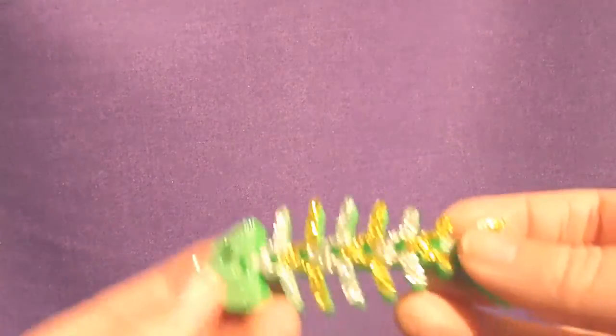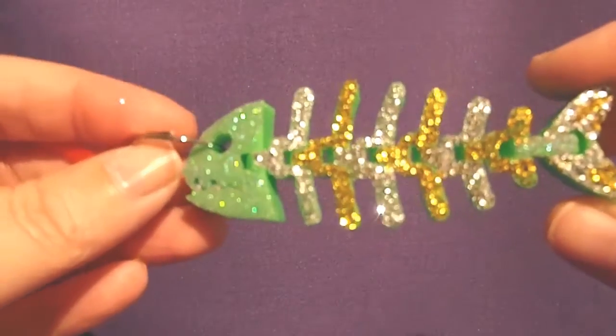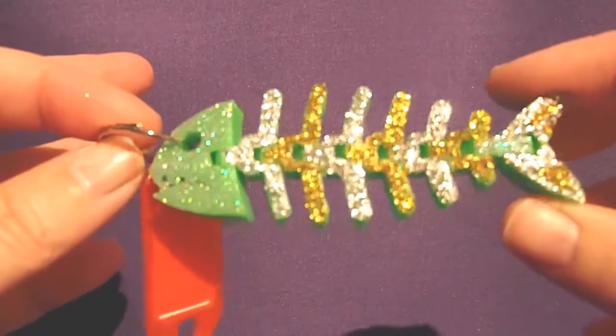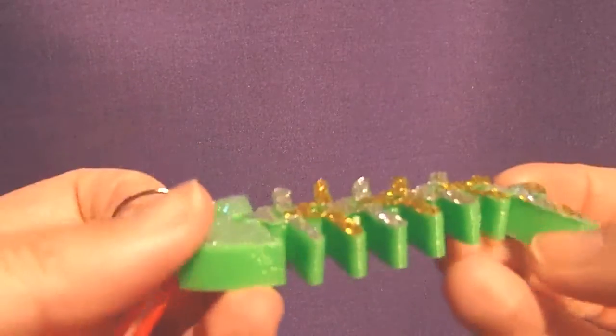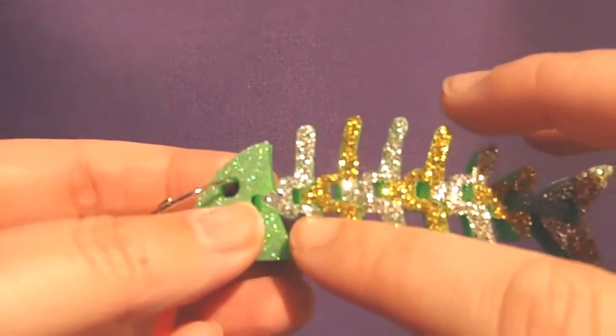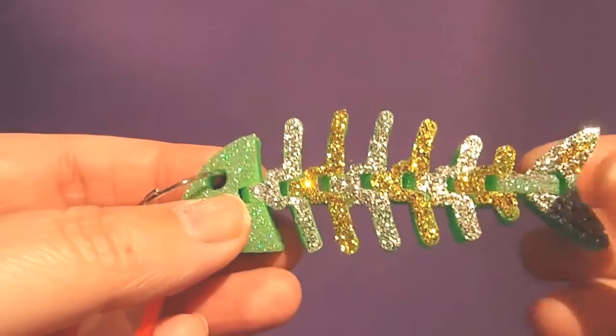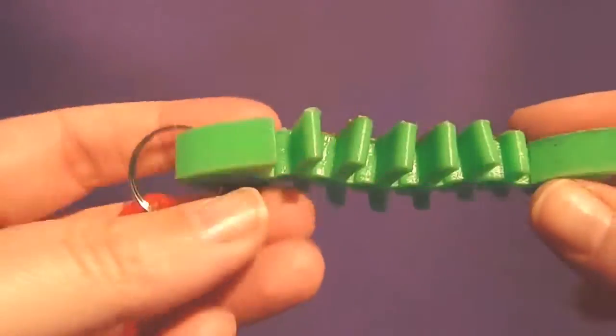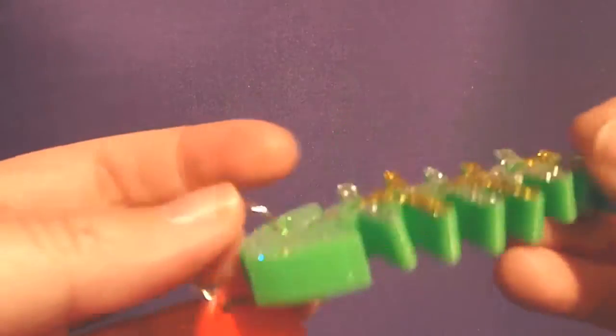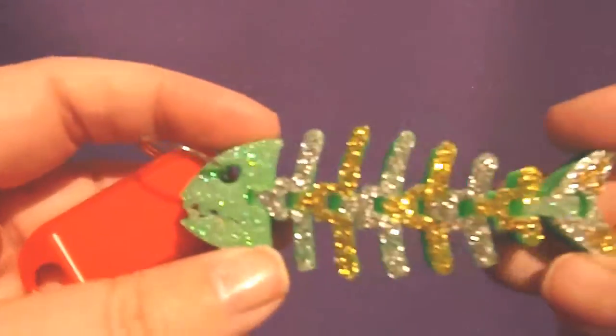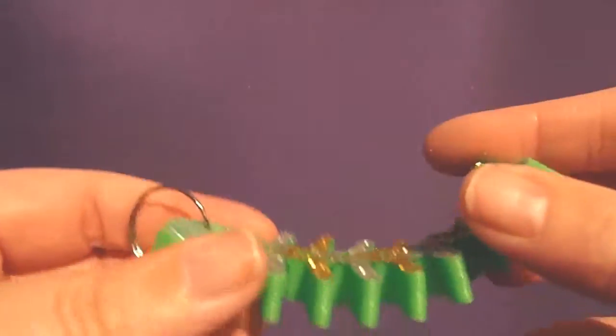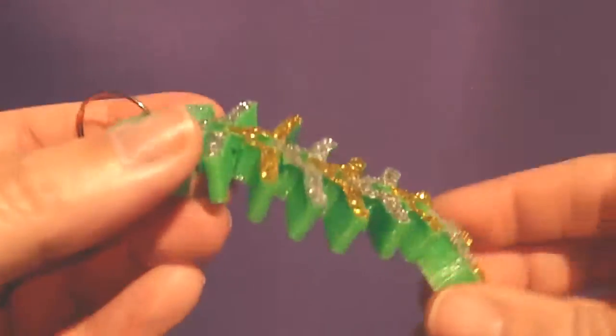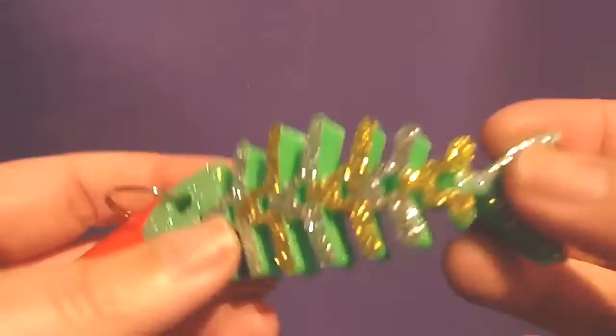Then we have the fish. Now this also prints in one piece but it moves. Now I'm not entirely sure how it prints it. I think there's like little bits that don't connect in here but they're tight that they don't come out. And again we just glittered it ready. But it's unusual. I quite like these movable ones that print in one go.